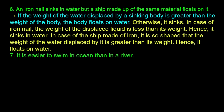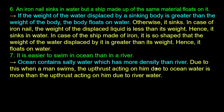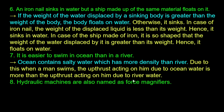Next: It is easier to swim in the ocean than in a river. The ocean contains salty water which has more density than river water. Due to this, when a man swims in the ocean, the upthrust acting on him due to ocean water is more than the upthrust acting on him due to river water.